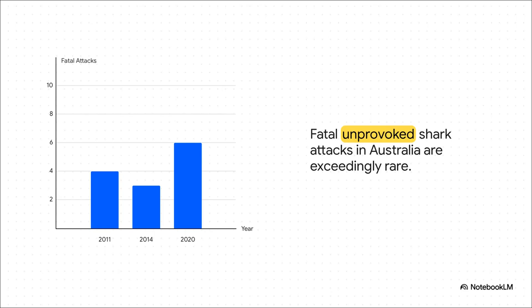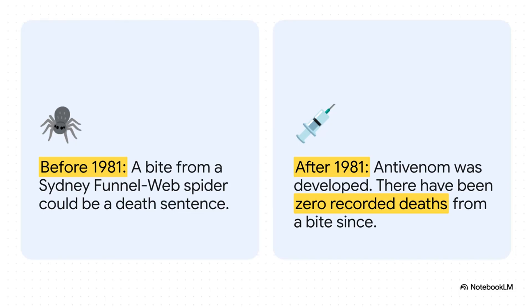Let's start with sharks. The ultimate movie monster, right? Well, if you look at fatal, unprovoked attacks, the numbers are consistently really low. Usually just a handful each year. Sure, 2020 was a bit higher with six deaths. But the reality is that fatal encounters are incredibly rare. Especially when you think about how many people are in the water every single day.